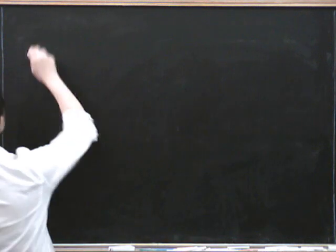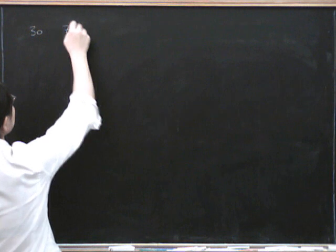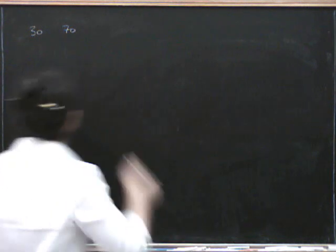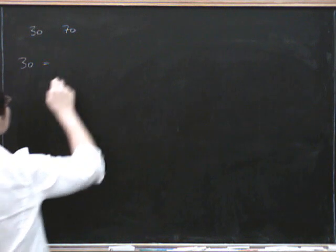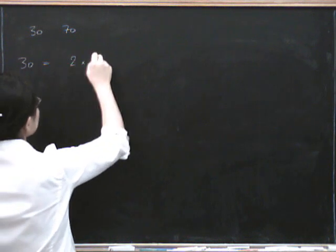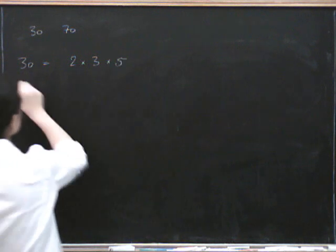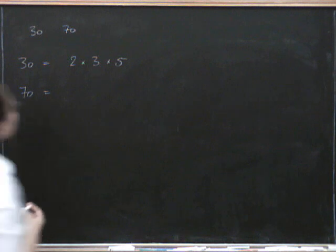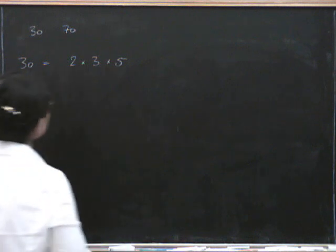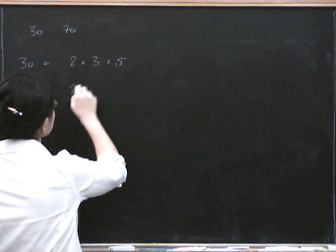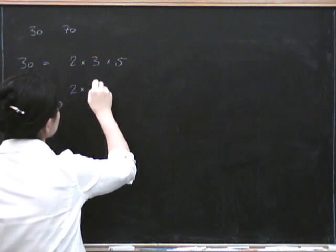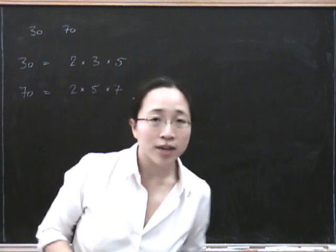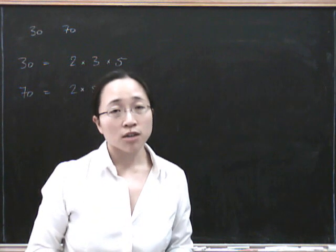So let's think about the numbers 30 and 70. The key that I'm going to use today is to think about the prime factorization. So 30 is 2 times 3 times 5, and 70 is 2 times 5 times 7. This gives us a way of finding out both the highest common factor and the lowest common multiple.